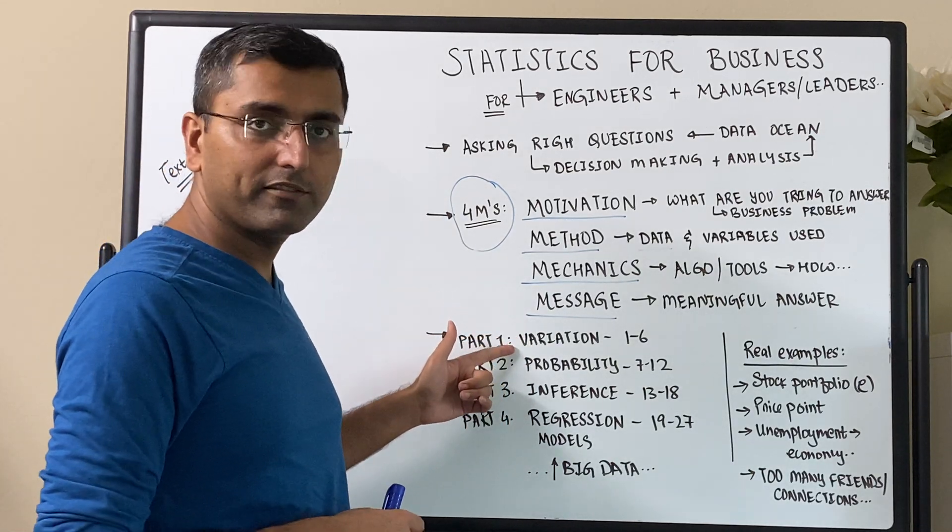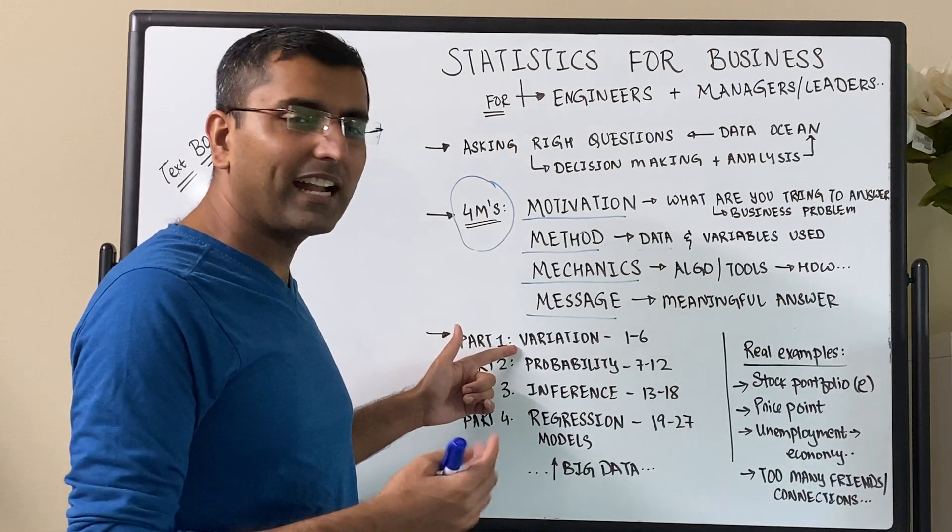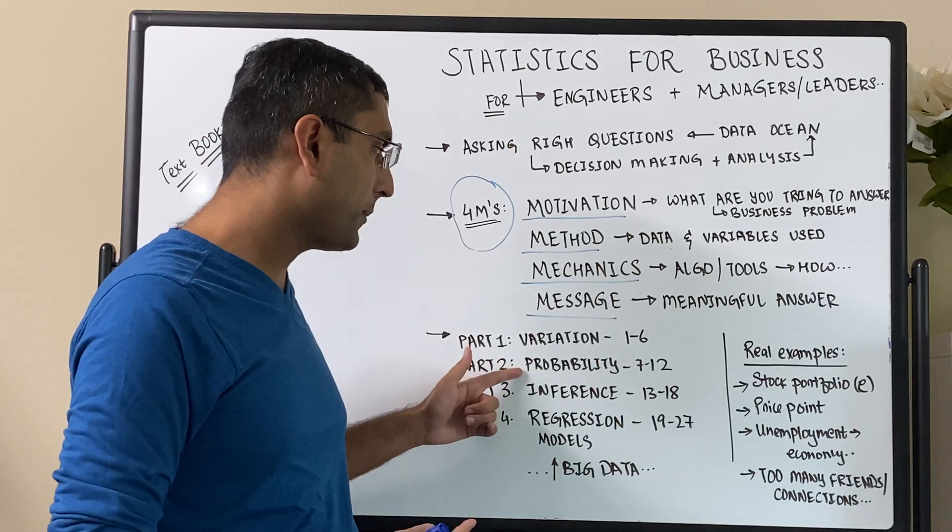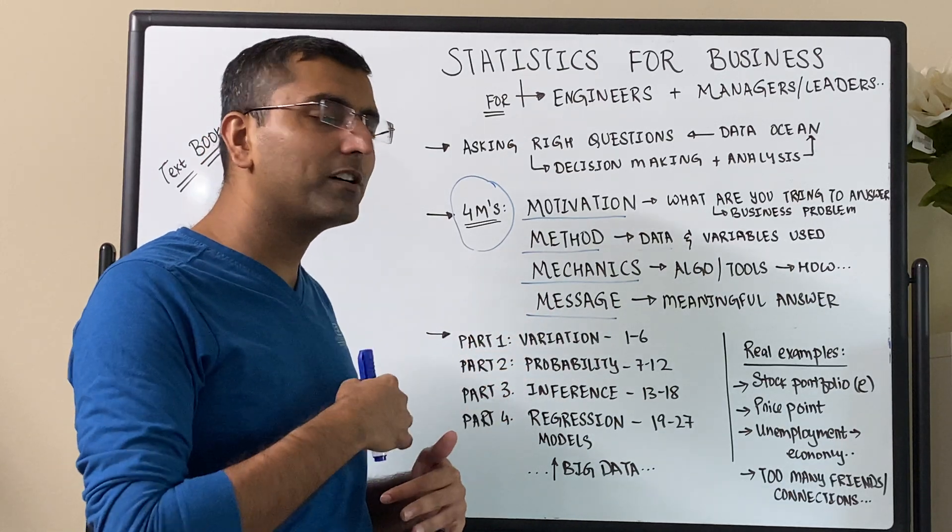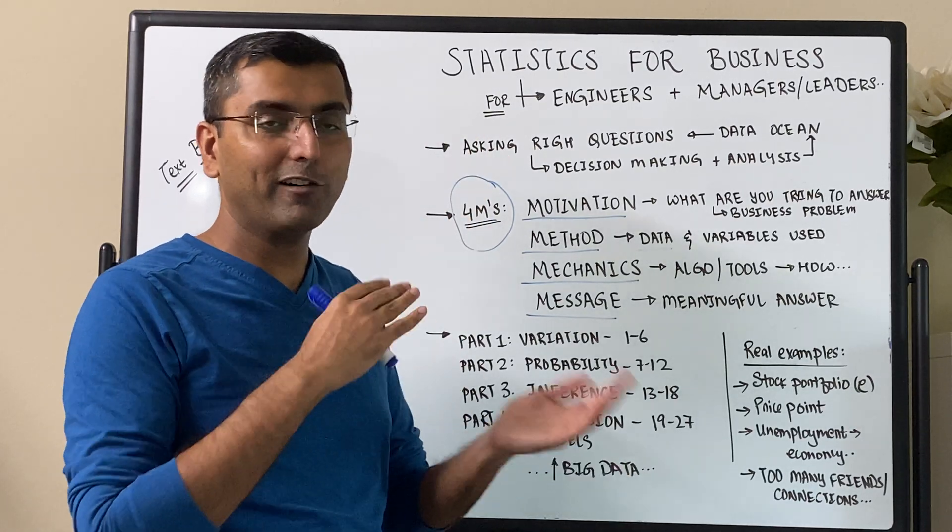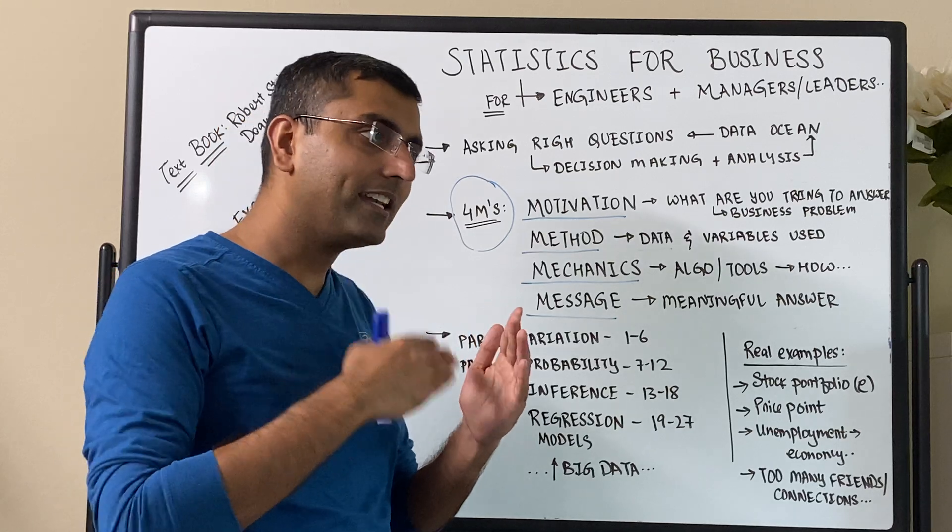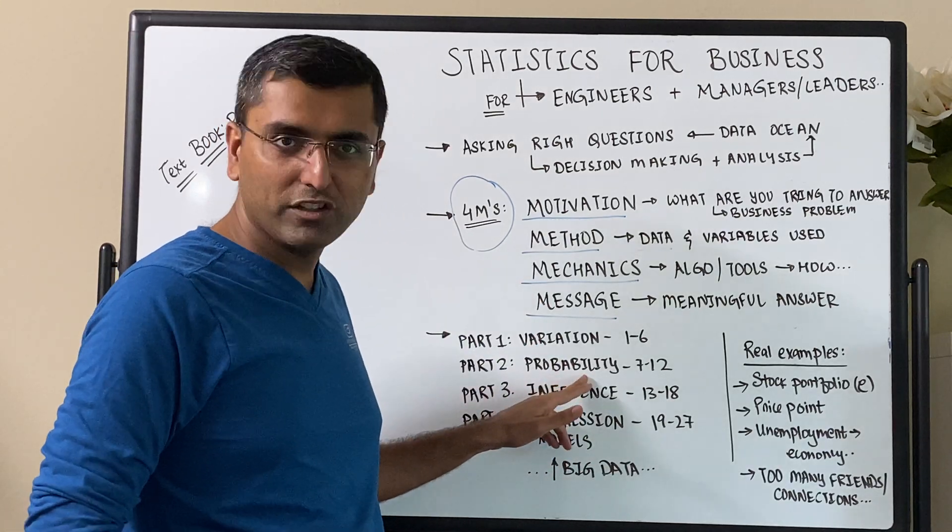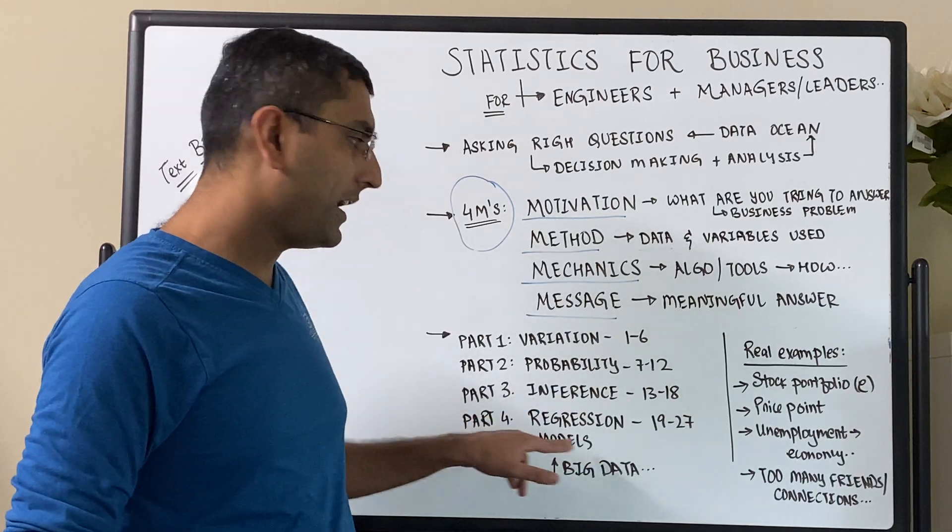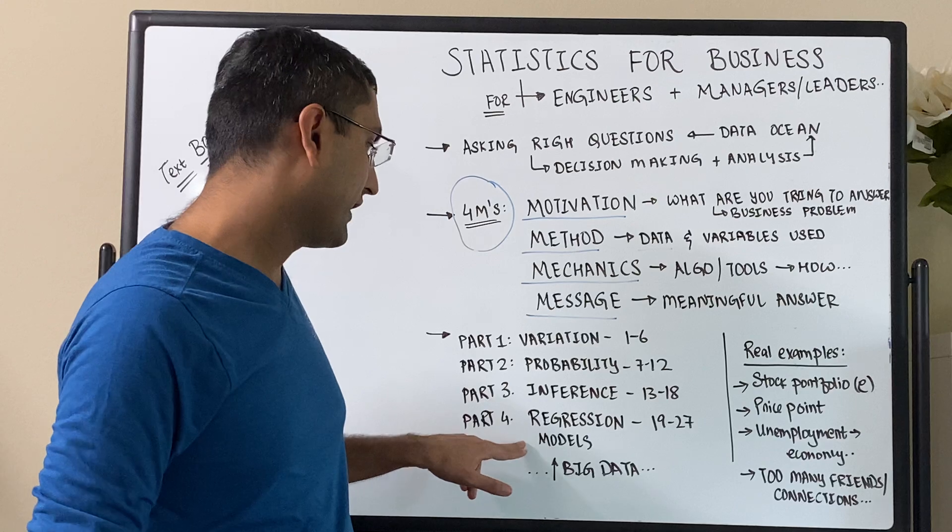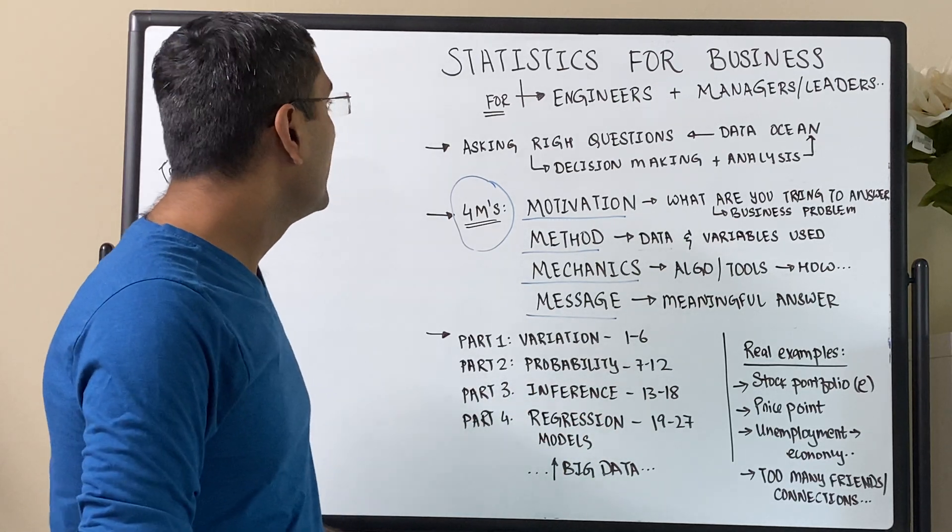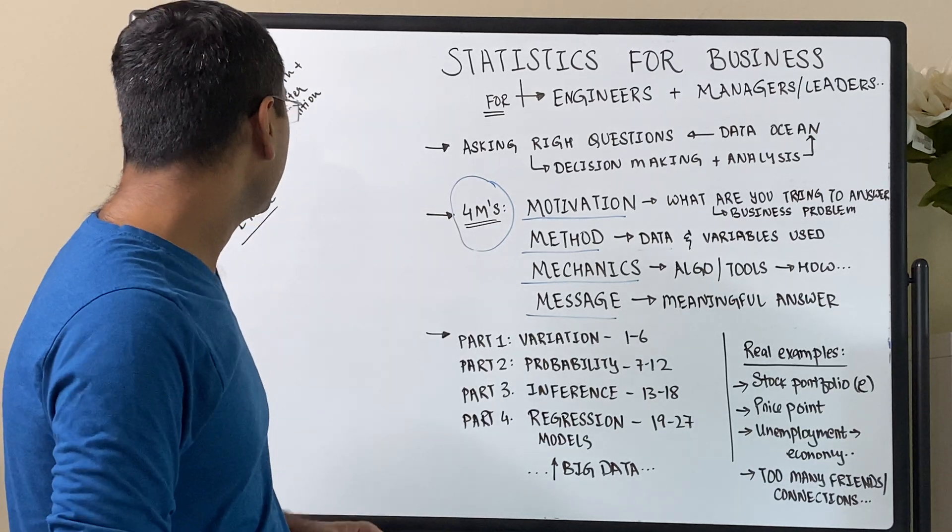There are four parts. The first six chapters is variation, where we understand what's the characteristics of the data, how it varies, what are the variables and whole host of things probability, as to once you have the data how do you plot it, how do you make sure that you use the right plots, how do you use the right graphs, and how do you get to the next step of inference with the probability distribution. So the third part is inference, the next six chapters, and the remaining eight chapters are regressions and models in which we'll have a lot of big data that's going to be used as well.